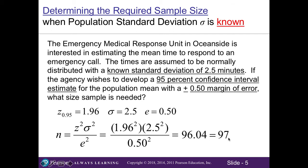Notice I'm rounding up to the next whole number. When working with the required sample size, we always round up to the next whole number, even if the decimal is very low — in this case, 0.04. If your required sample size is shy of the minimum requirement, you wouldn't be able to develop a good confidence interval estimate. It's like the minimum drinking age: you can't drink at 20 years and 11 months, only at 21 or older. So always round up to 97.